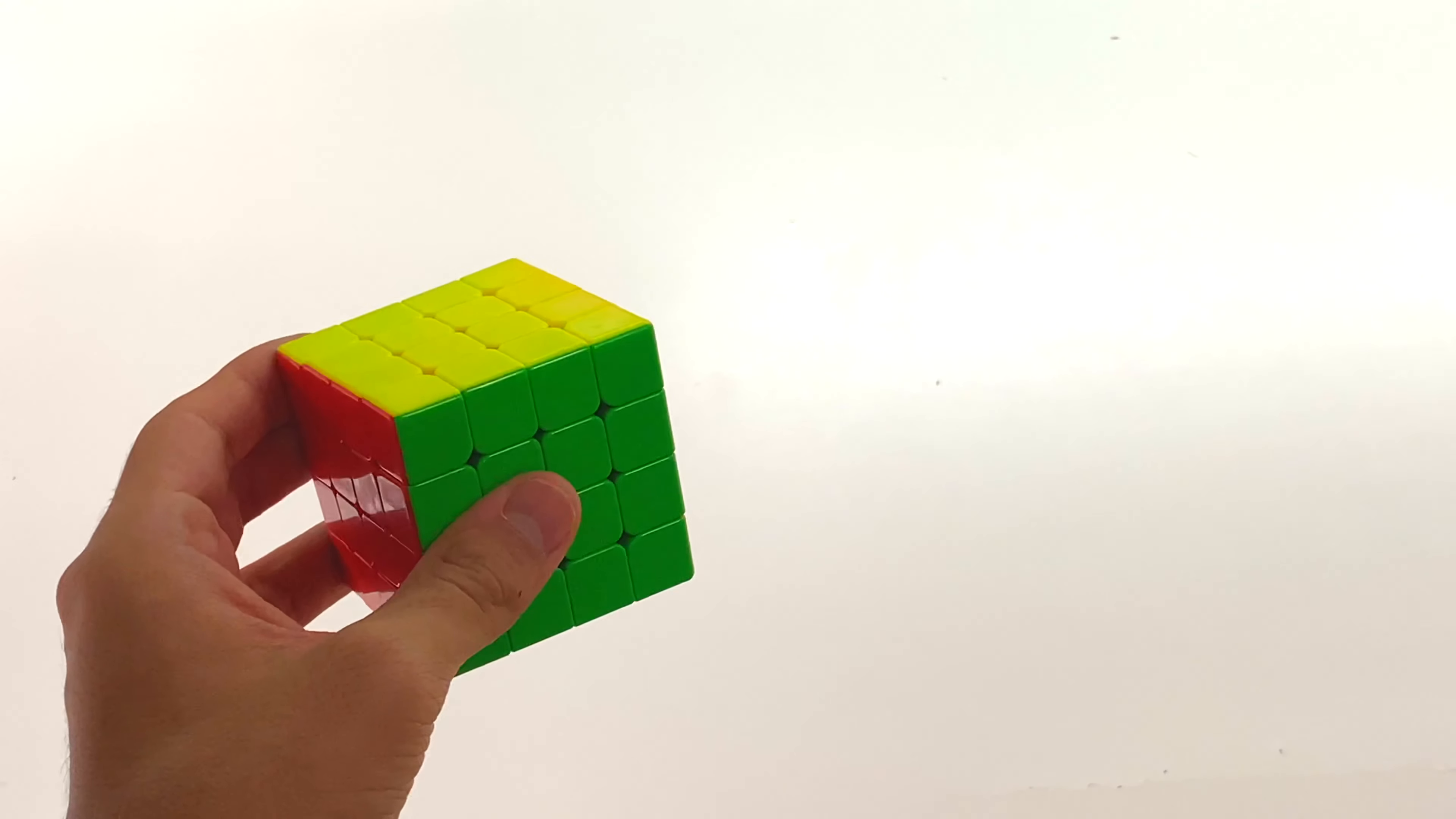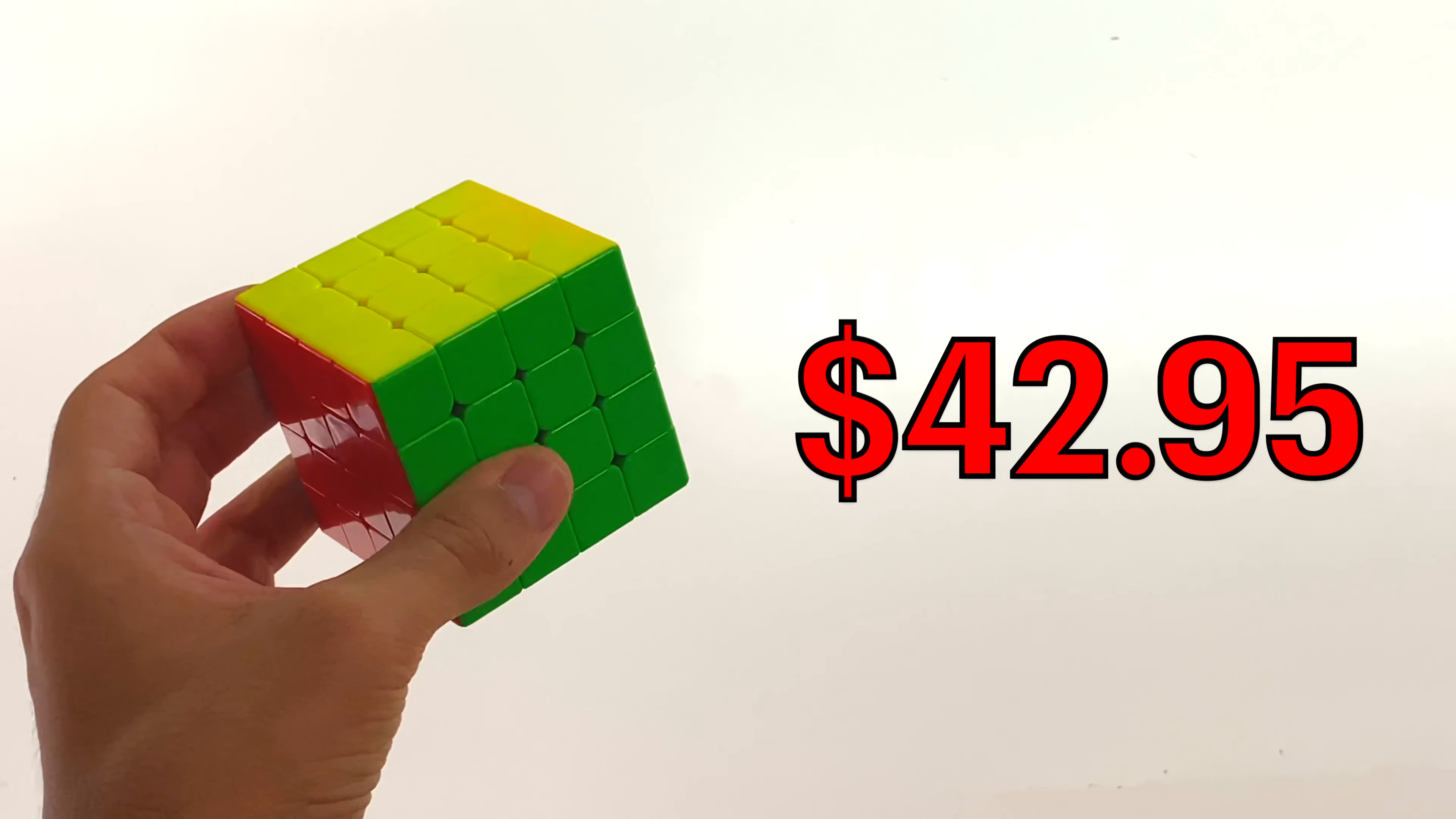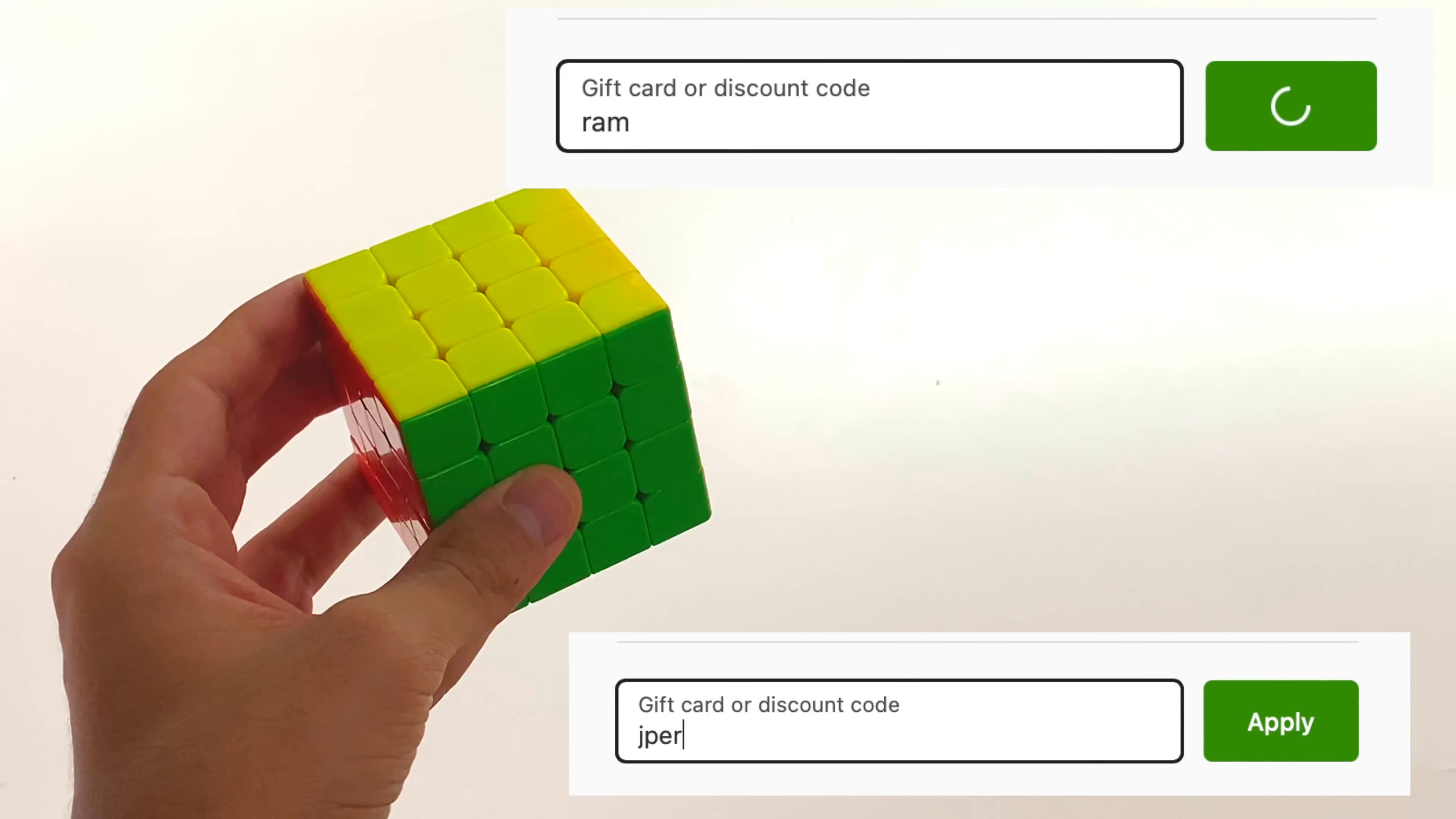For starters, the Aosu WRM can be bought at Speedcube Shop for $42.95. This is more on the expensive side when you compare it to other 4x4s like the MGC. However, in my opinion, it is worth it. Also, you can get 5% off your order if you use the discount code RAM or JPERM at checkout.